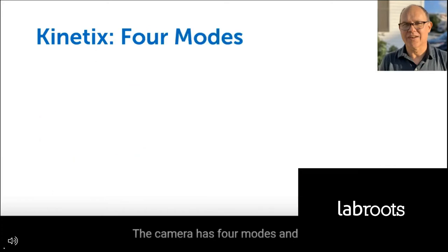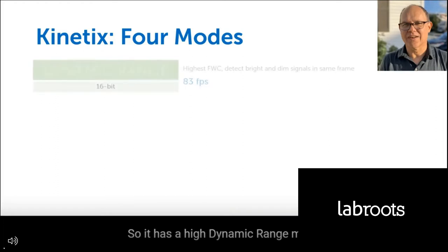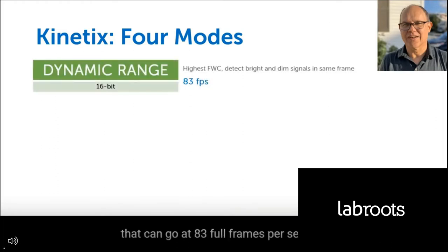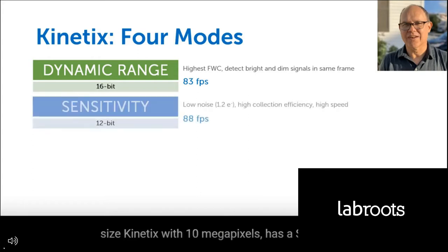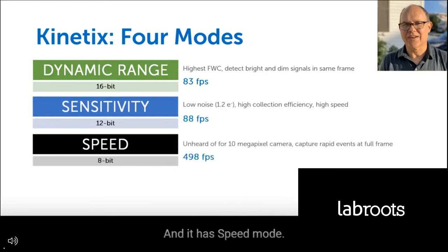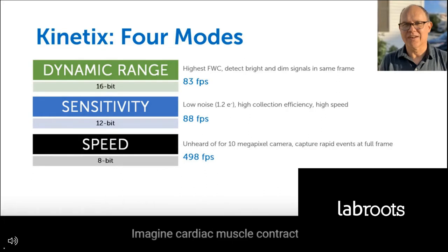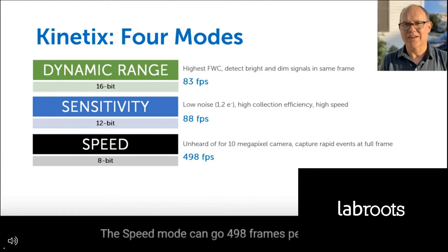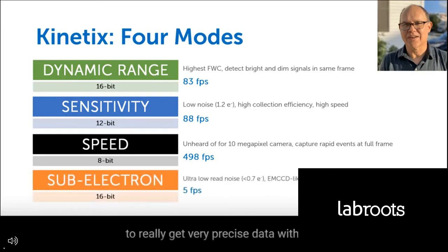The camera has four modes, making it the most flexible and precise camera on the market. It has a High Dynamic Range mode running at 83 full frames per second at full 10-megapixel size. It has a Sensitivity mode for slightly lower read noise, higher collection efficiency, and slightly better speed. Speed Mode, for measuring fast processes quantitatively — such as cardiac muscle contraction or voltage changes in neurons as action potentials run down an axon — can go 498 frames per second. There is also a Sub-Electron Readout Mode for very precise data with less than one electron read noise, approximately 0.7 electrons.